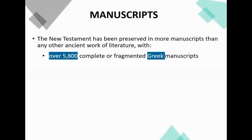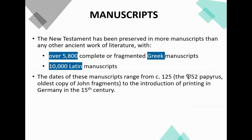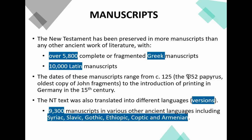The New Testament has been preserved in more manuscripts than any other ancient work of literature. We have over 5,800 complete or fragmented Greek manuscripts — no other document can make that claim. We also have 10,000 Latin manuscripts, with dates ranging from around 125 AD. That is Papyrus 52, the oldest copy of John. Amazing — if you think that John only wrote around AD 100, we have a document from literally 25 years after he wrote it. We also have 9,300 manuscripts in other languages, including Syriac, Slavic, Gothic, Ethiopic, Coptic, and Armenian.